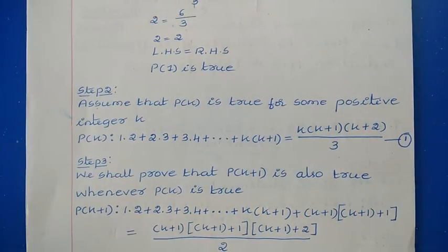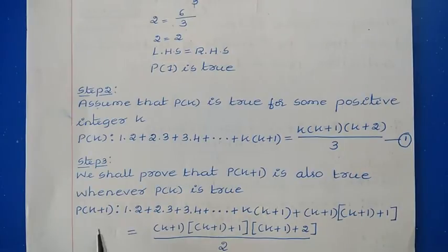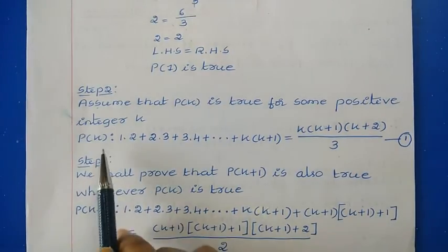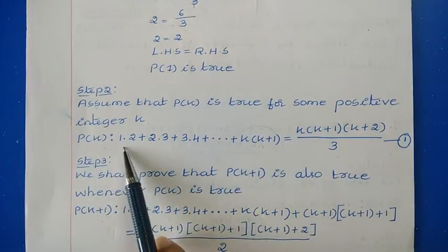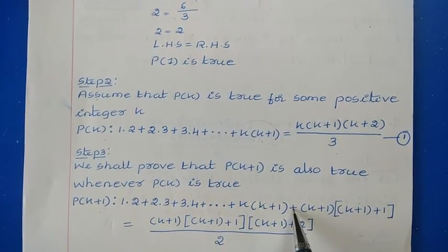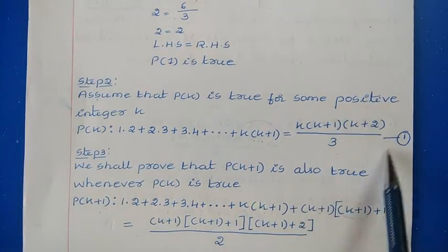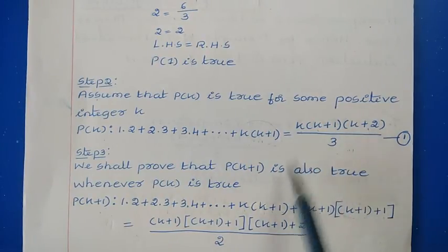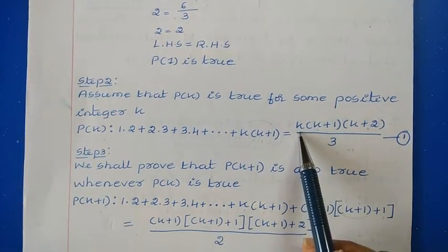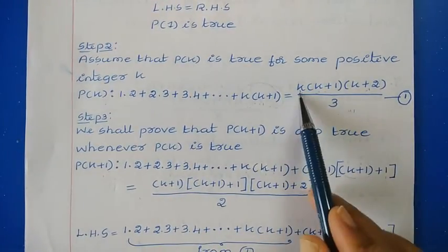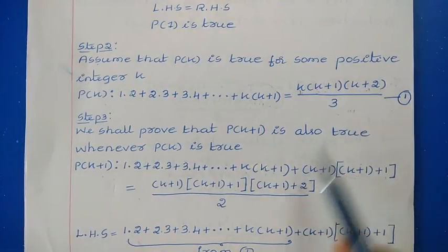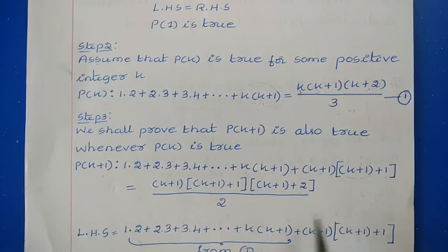The third step is to prove P(k+1) using the assumption from step 2. Writing P(k+1): the left-hand side goes up to (k+1)(k+2), and the right-hand side becomes (k+1)(k+2)(k+3)/3, replacing k with k+1 everywhere. So the statement to prove is: 1×2 + 2×3 + ... + k(k+1) + (k+1)(k+2) = (k+1)(k+2)(k+3)/3.